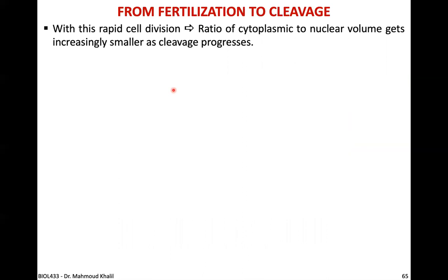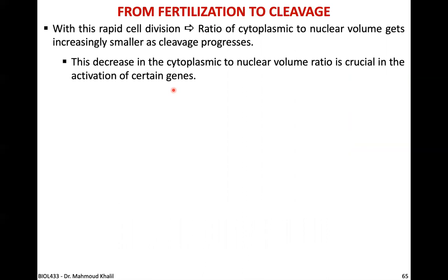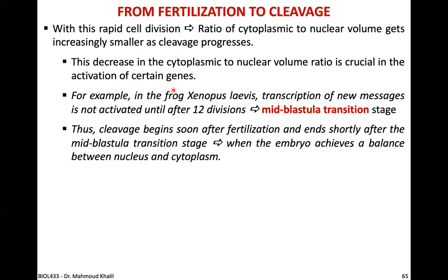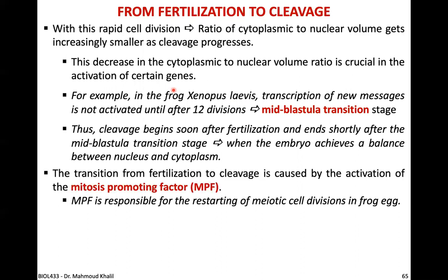As cleavage progresses, the ratio of cytoplasm to nuclear volume gets increasingly smaller. This decrease in the cytoplasmic-to-nuclear volume ratio is crucial in activating certain genes. In Xenopus laevis, transcription of new messages is not activated until after the 12th division, generally called the mid-blastular stage. Cleavage ends shortly after the mid-blastular transition when the embryo achieves a balance between nuclear and cytoplasmic ratio. The transition from fertilization to cleavage is caused by activation of the mitosis-promoting factor, MPF.